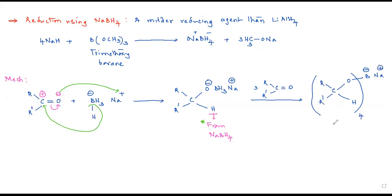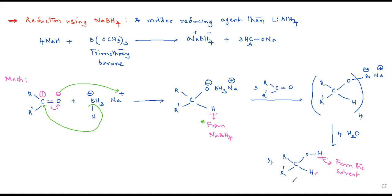Now when this is subjected to hydrolysis, finally we get O — and also a hydrogen. The point is this hydrogen is from the solvent. This hydrogen is from sodium borohydride and this one is from the solvent — a very important point. So along with this, we get sodium hydroxide and of course boric acid.